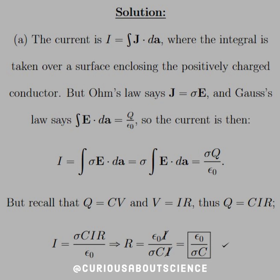Plug Q into the current equation, and we see here that we get I equals sigma CIR over epsilon-not. Solving this for R, we see that the I's cancel. Pretty nice. And we are indeed left with epsilon-not over sigma-C. Pretty cool.